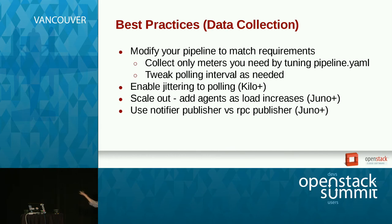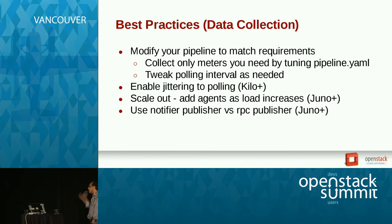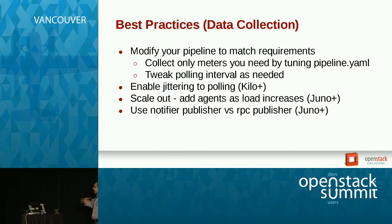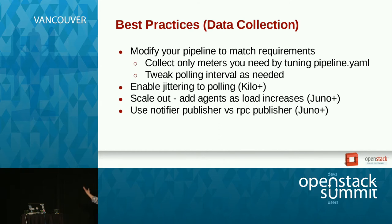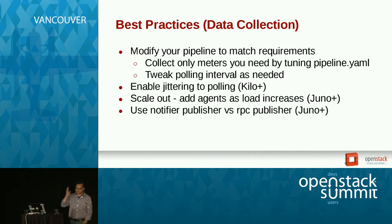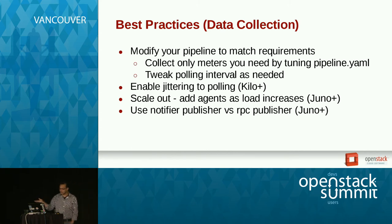Scale out by adding agents as the load increases. You as a cloud admin know best how your infrastructure is scaling and how much load is coming at what point in time. Add more agents based on your needs — address the problem before your application goes down under heavy load. Also, instead of using the RPC publisher, use the Notifier publisher. It's much more scalable, it uses Oslo messaging, and avoids the RPC overhead — we have that support since Juno.